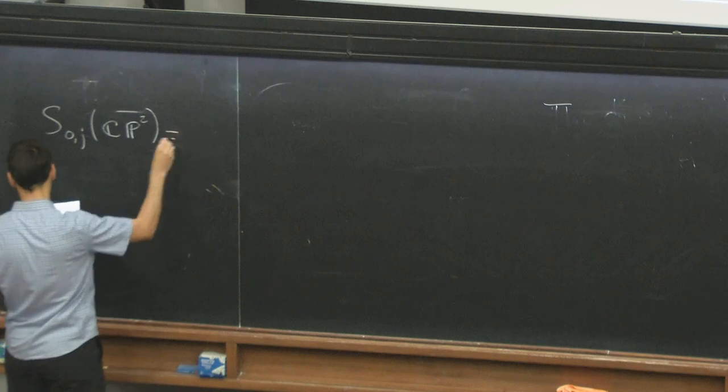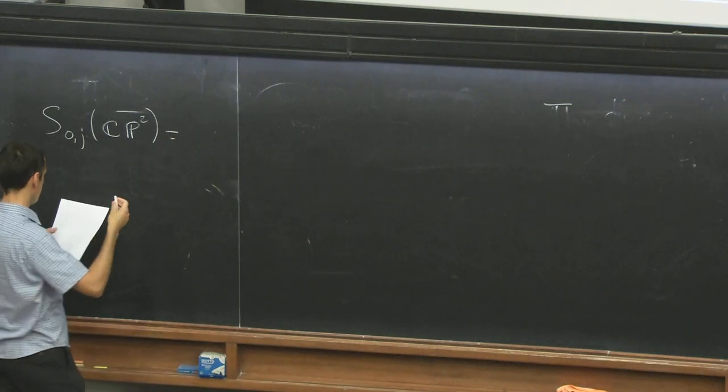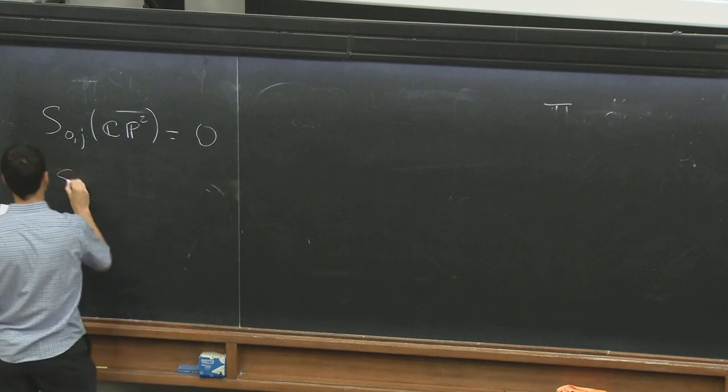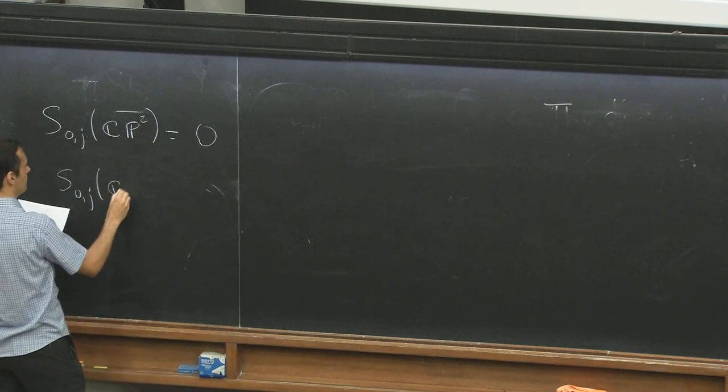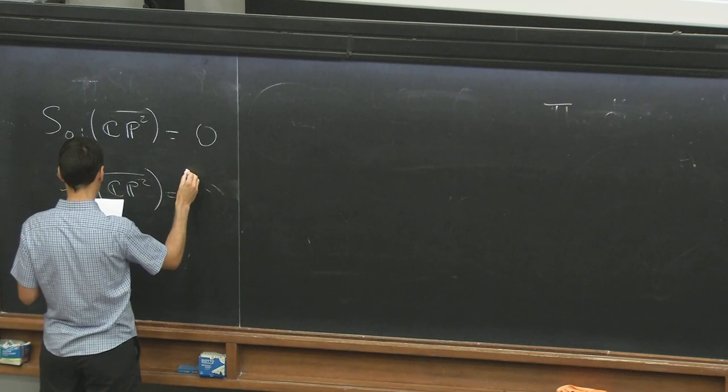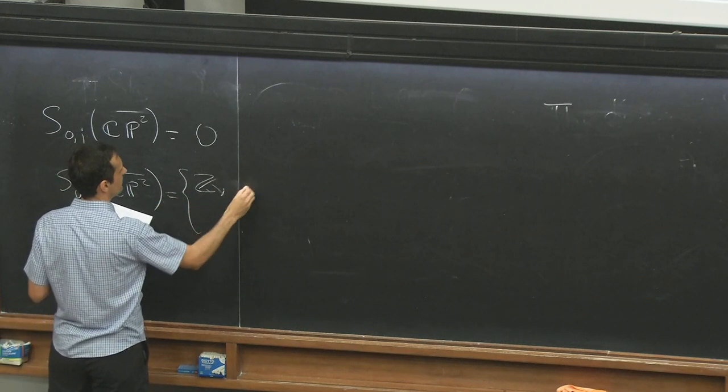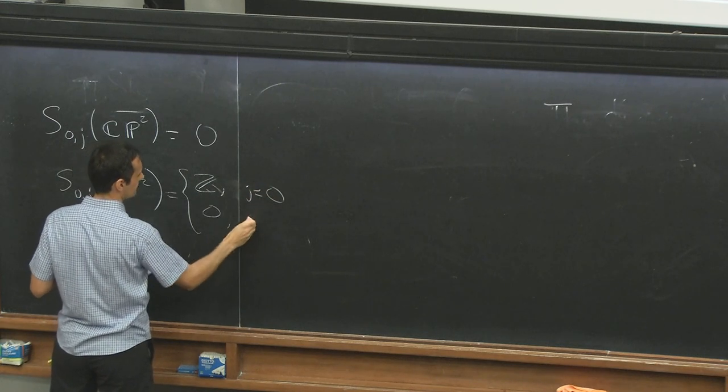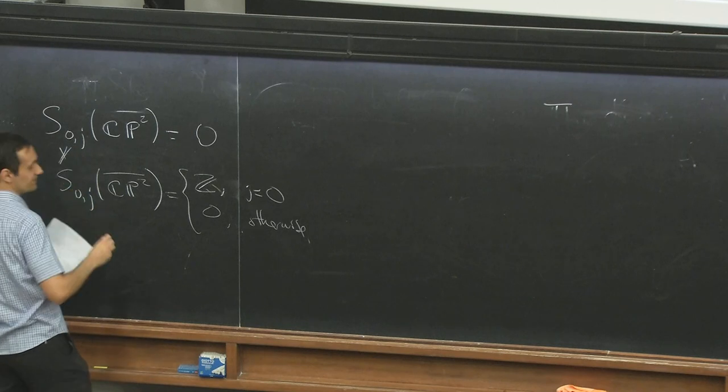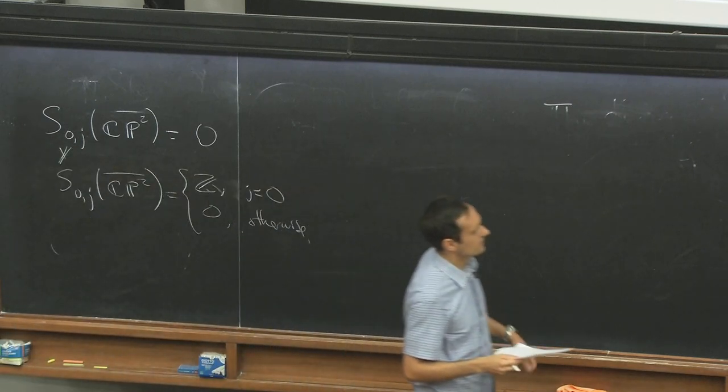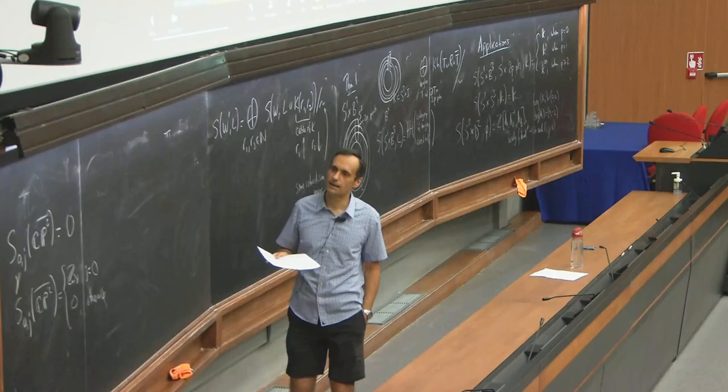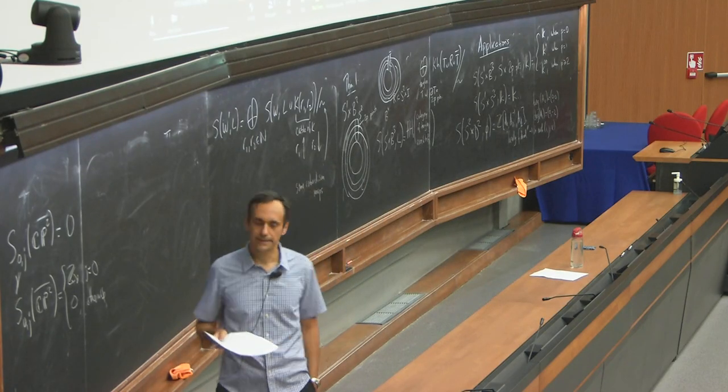In homological degree zero only, I get that, well, this is zero. And whereas for CP2 bar, I get that this is j equals zero and zero otherwise. So these are pretty different. This involves the two handle theorem applied to the trefoil knot framed one.